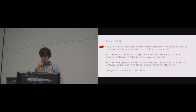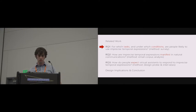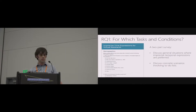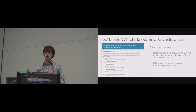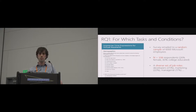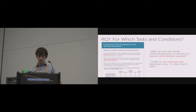To answer the first research question — for which tasks and under which conditions are people likely to use imprecise temporal expressions — we deployed a survey divided into two parts. In the first part, we asked people about general situations where imprecise temporal expressions were appropriate or preferred. In the second part, we asked about concrete scenarios involving a to-do list. The survey was sent to a random sample of Microsoft employees, and 338 people responded across a variety of job roles.